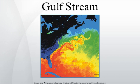The Gulf Stream proper is a western intensified current, driven largely by wind stress. The North Atlantic Drift, in contrast, is largely thermohaline circulation-driven. In 1958, the oceanographer Henry Stommel noted that very little water from the Gulf of Mexico was actually in the stream.